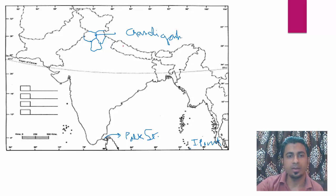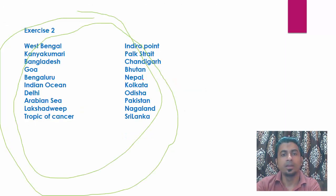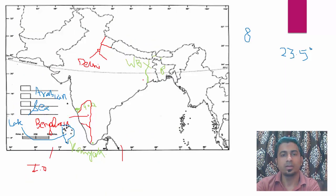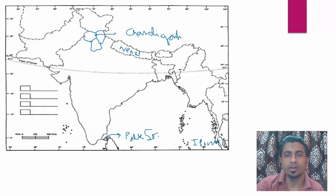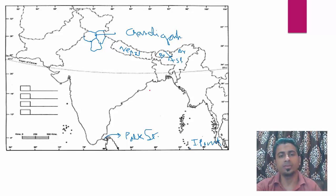Next we have Nepal. Nepal is a landlocked country — it is north of India, between India and China. So Nepal is here — very easy. The next is Bhutan. Bhutan is also very easy — Bhutan is here. It is to the west of Arunachal Pradesh and to the north of Assam. If you know all these states, you know where Bhutan is — it will be very easy for you.